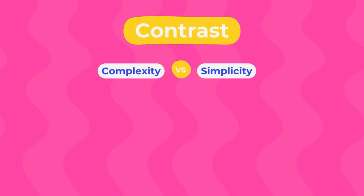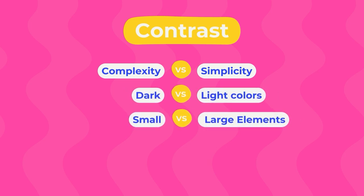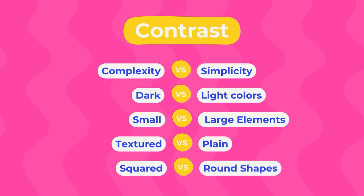Asymmetrical balance is very often produced by adding contrast to your designs. Let's recap the types of contrast we've seen: complexity versus simplicity, dark versus light colors, small versus large elements (scale), textured versus plain, and squared versus more rounded shapes. These contrasts create the asymmetry, but because they balance each other out, they re-establish balance — that's asymmetrical balance. I hope this was clear; it is a complex topic.